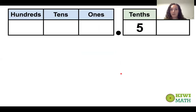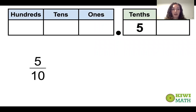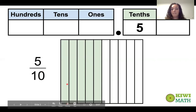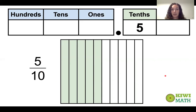Let's think about 0.5 — five tenths — and what that would look like as a fraction. Five tenths as a fraction looks like five over ten. For the model, because the denominator is ten, there have to be ten equal parts, and because the numerator is five, five pieces are shaded in. This is exactly why 0.5 is equivalent to a half, because five is half of ten, so five tenths equals a half.